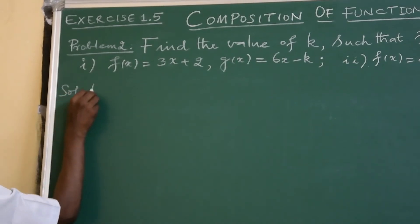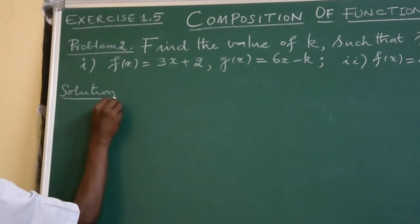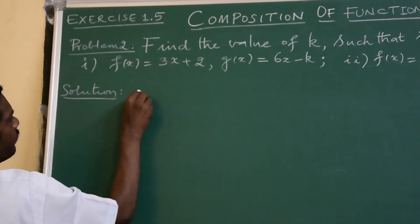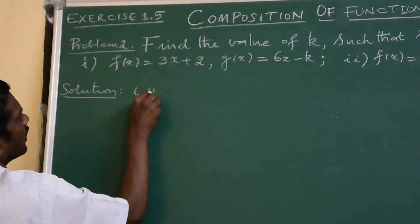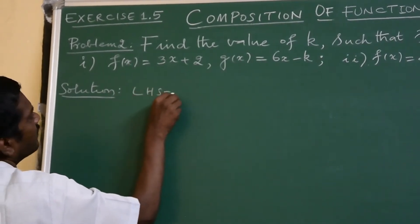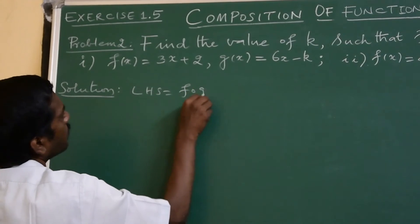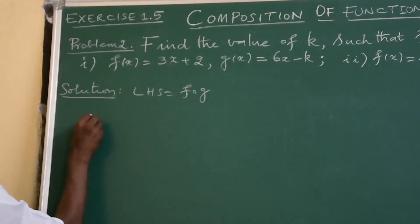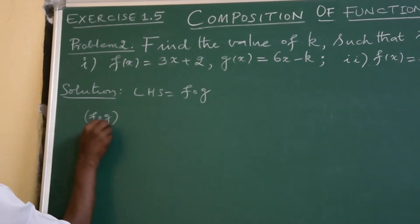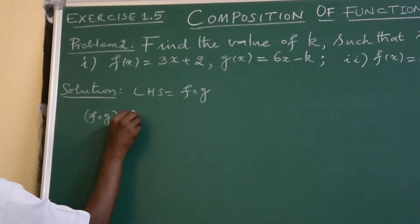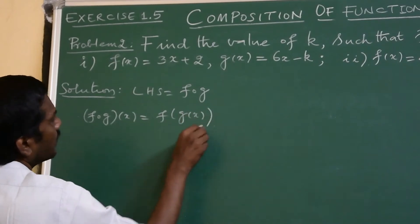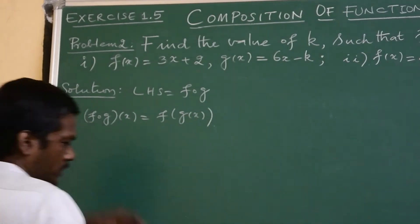First, we compute f composite g, which is the left hand side. F composite g of x means f of g of x.